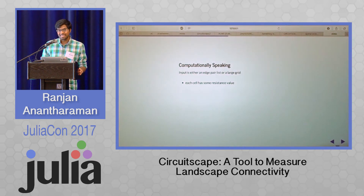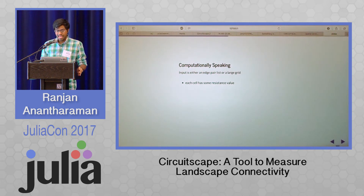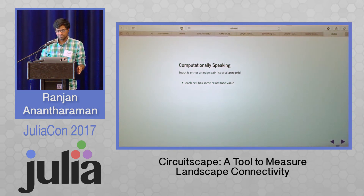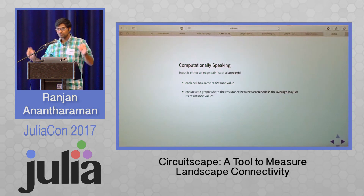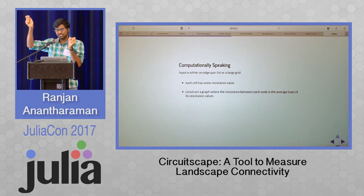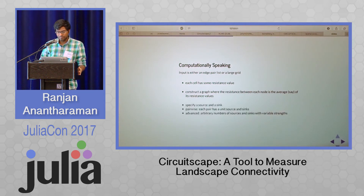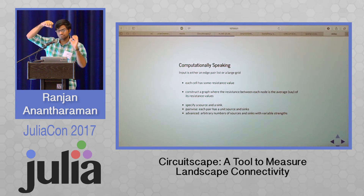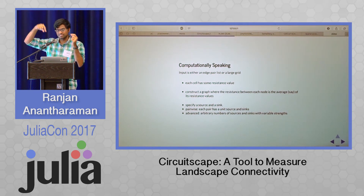Computationally speaking, what exactly is Circuitscape doing? The input is either an edge pair or a large grid, and each cell within this grid has some resistance values. You take all these resistance values and construct a large sparse graph, wherein the resistance between two nodes is either the average or some aggregation between two nodes. You then take the source and the sink, and if you're in pairwise mode, you assign both source and sink as one ampere and calculate the least-resistance path.